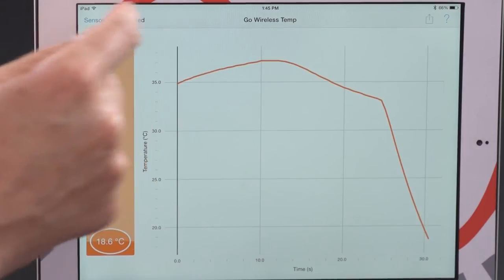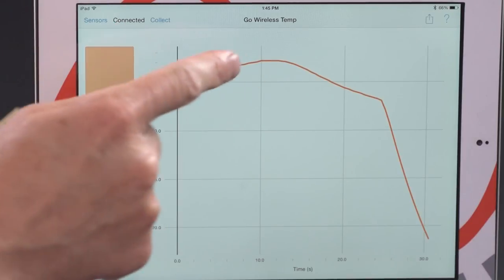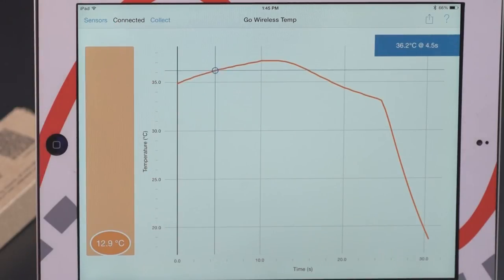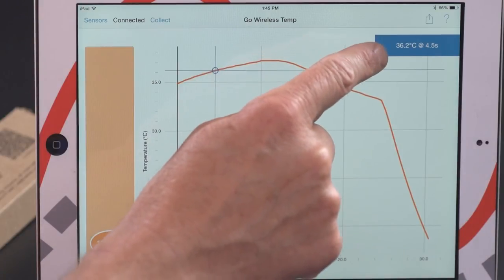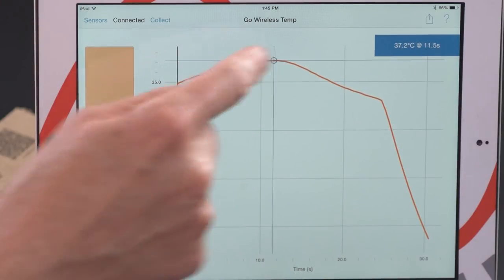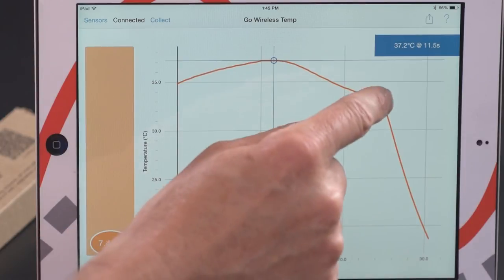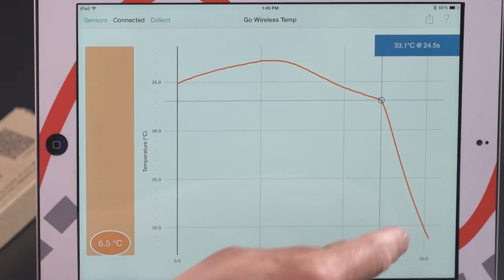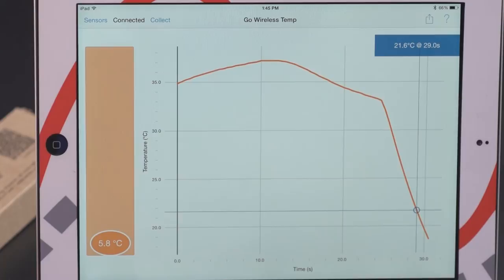Now that we've collected some data, we're able to go through and select points and read off those data points, examine those data points. Over here you can see the reading. If I move around the graph, maybe these points are interesting. You can see the temperature at those individual points on the graph.